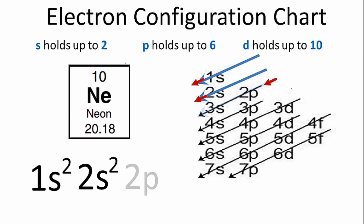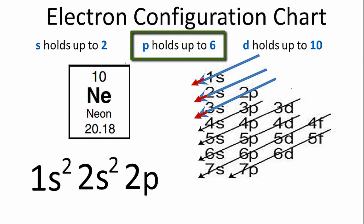Let's go to the third row, and we have 2p. P orbitals can hold up to 6 electrons. We already have 4, so we need 6 more to get to 10, so we'll put a 6 after the 2p.